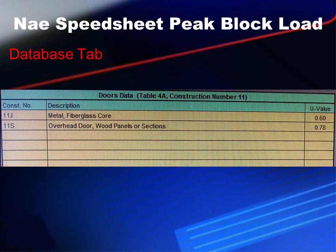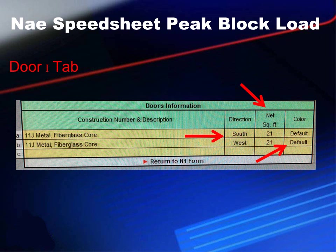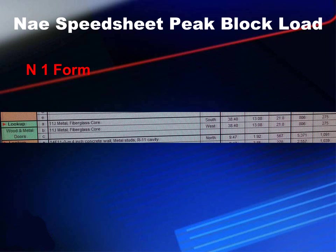We follow the same procedure for doors. In the database, we enter construction number 11J — metal fiberglass core door — with a U-value of 0.60. Then we move to the Door 1 tab, select door type A or B using the scroll-down, enter the direction, net square feet, and color. After that, hit the button at the bottom to return to the N1 form, do the lookup, select the door, click on it — it shows the direction, we enter the square footage, and the rest is automatic. The multiplication is done for us, and we're done with doors.